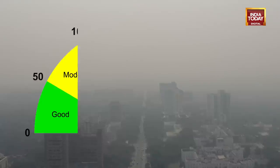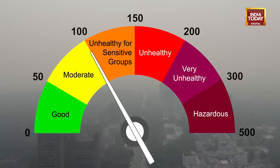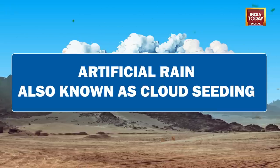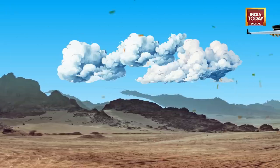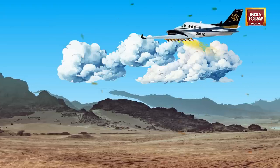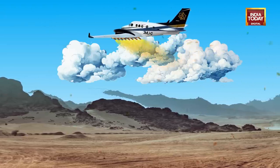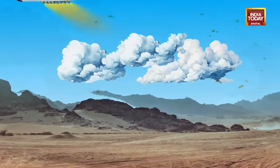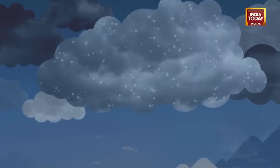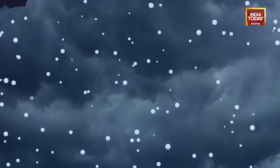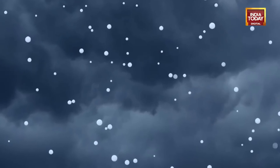This innovative approach aims to tackle concerns related to the air quality index, or AQI, in the capital. Artificial rain, also known as cloud seeding, is a weather modification technique that aims to increase precipitation by dispersing hygroscopic particles into clouds using aircraft or helicopters. Hygroscopic means they attract water — the greater the hygroscopicity of a particle, the more water it absorbs.